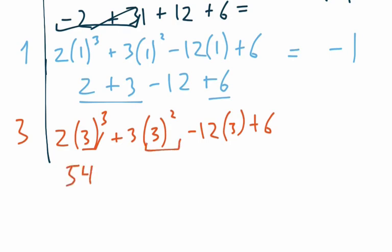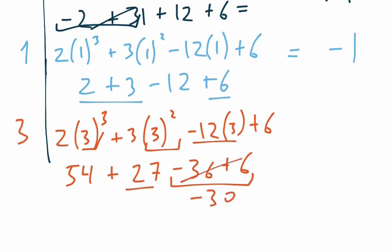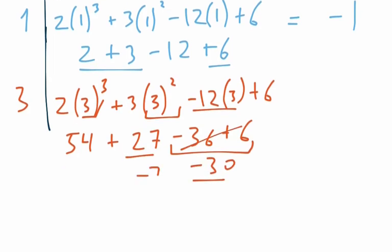3 squared is 9. 3 times 9 is 27. Negative 12 times 3 is negative 36 and then plus 6. And then here we can say, okay, so negative 36 plus 6 is just negative 30. Negative 30 plus 27 is negative 3. And then 54 minus 3 is indeed 51.